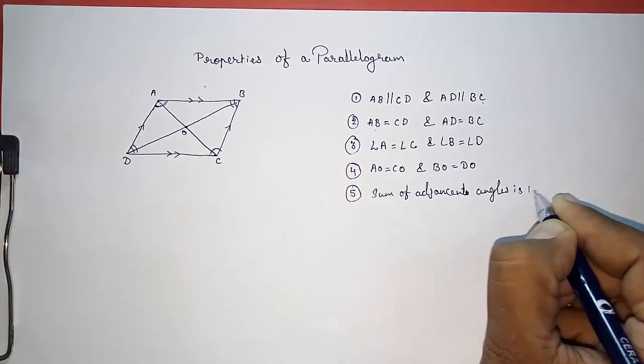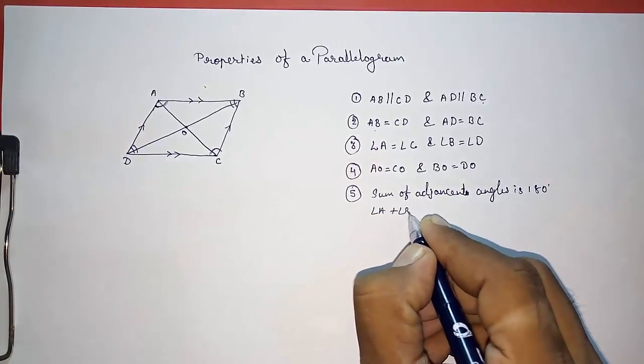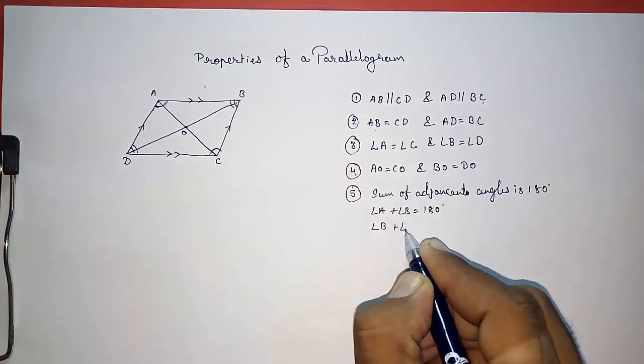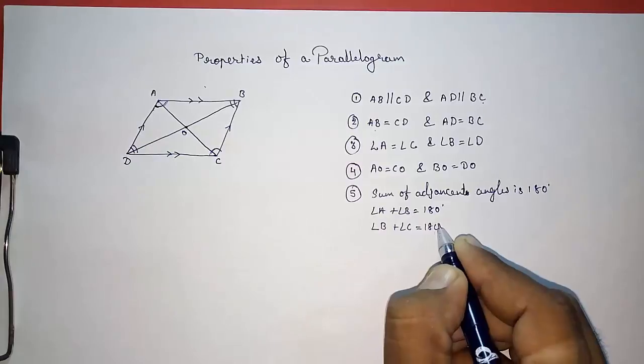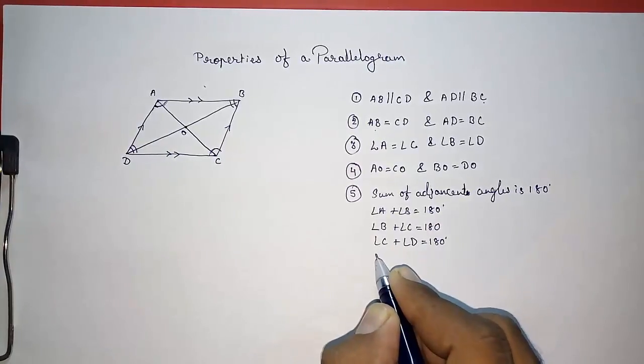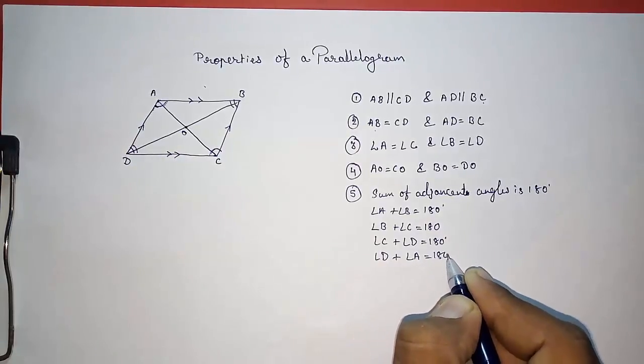...is 180 degrees. You can write: angle A plus angle B equals 180, angle B plus angle C equals 180, angle C plus angle D equals 180, and angle D plus angle A equals 180 degrees.